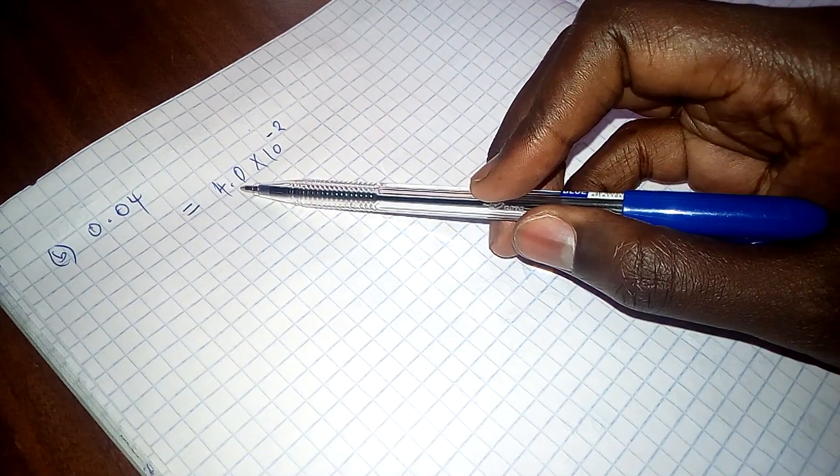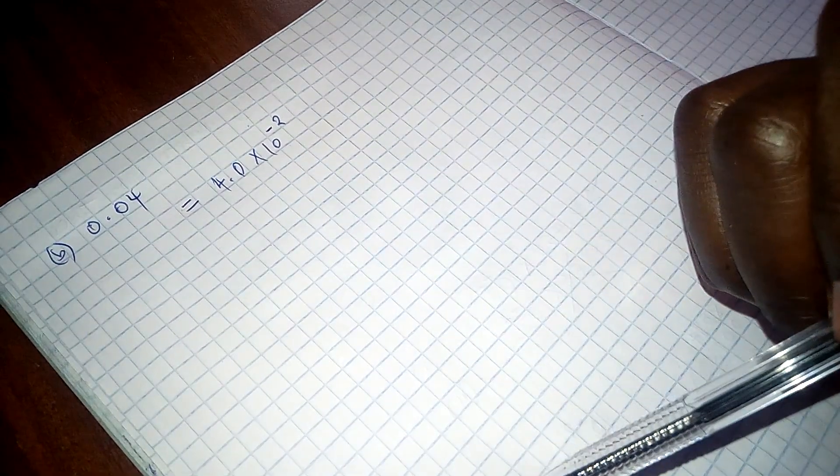We get the square root of this from our mathematical table and we can as well get the square root of that.